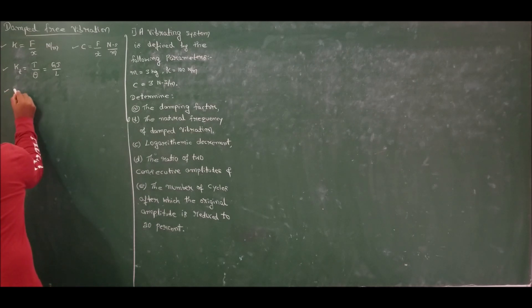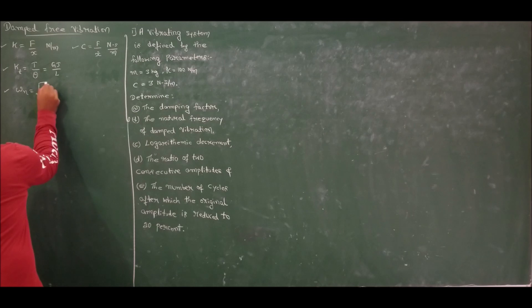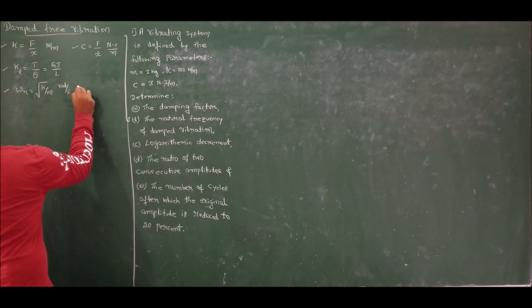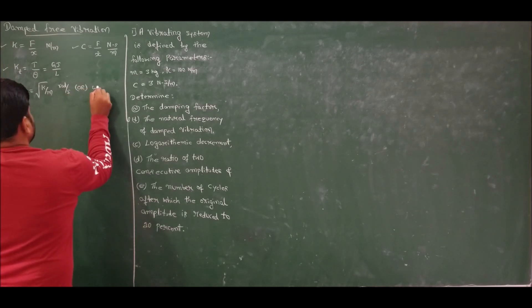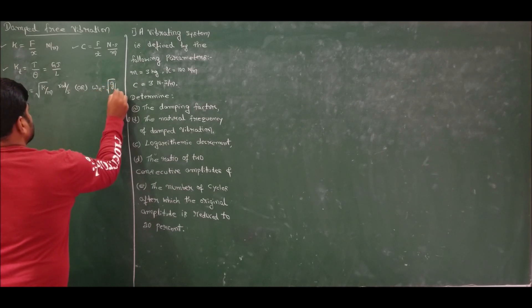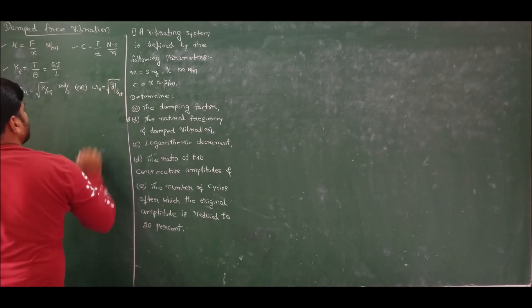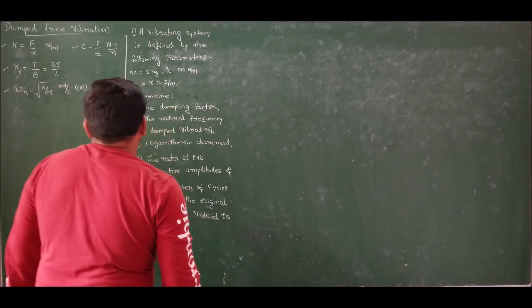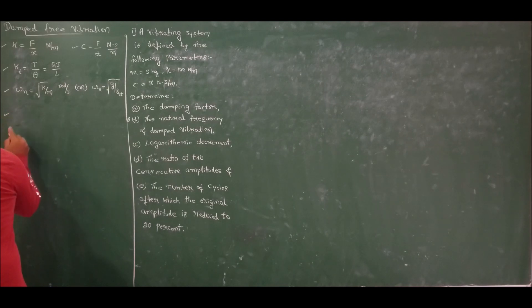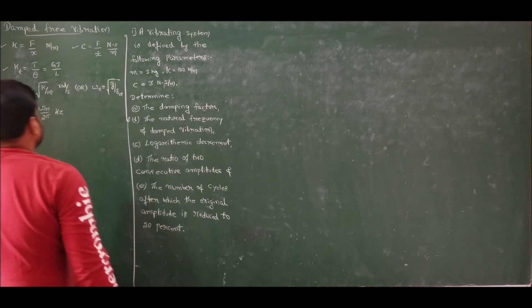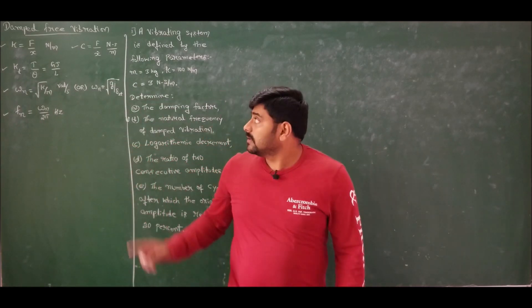Next, we have the natural frequency expression given by the square root of K by M, in radians per second. If we know static deflection, we can find omega_n using the formula: root of G by delta_static. Natural frequency in hertz is given by omega_n divided by 2 pi. These are what we learned in the first part of this module on undamped free vibration.